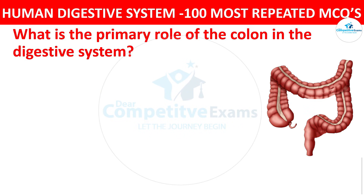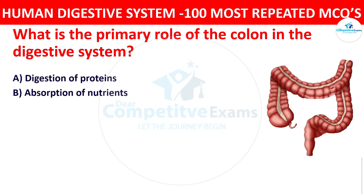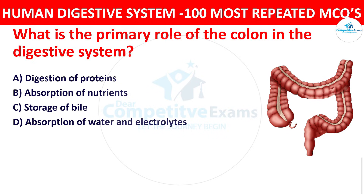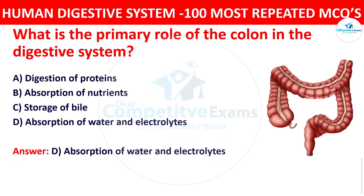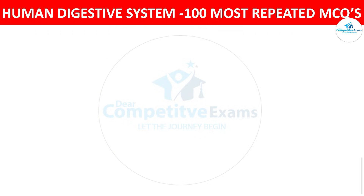Question number eighteen: What is the primary role of the colon in the digestive system? The options are digestion of proteins, absorption of nutrients, storage of bile, or absorption of water and electrolytes. The right answer is absorption of water and electrolytes. The colon primarily absorbs water and electrolytes from undigested food, forming feces.